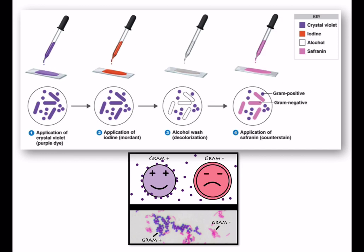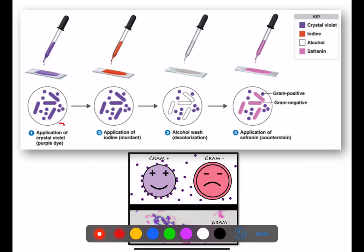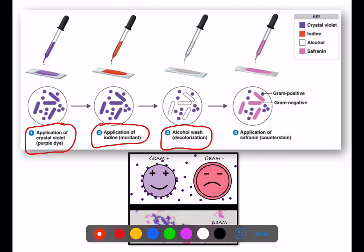The first step is application of crystal violet, which is the primary stain — a purple dye. The second step is application of iodine, which acts as a mordant, meaning it fixes the primary stain. After that, an alcohol wash is done which acts as a de-staining procedure — that is decolorization. The last step is application of the counter stain, which is safranin, pink in color.